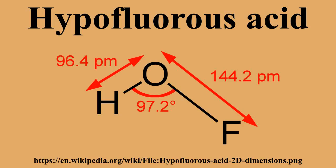For fluorine, the only known oxoacid is hypofluorous acid, HOF. It can be made by passing F2 gas over ice at minus 40 degrees Celsius, collecting the HOF gas, and condensing it. The reaction produces HOF and HF. It decomposes explosively at room temperature to form HF and O2: 2 HOF → 2 HF + O2.